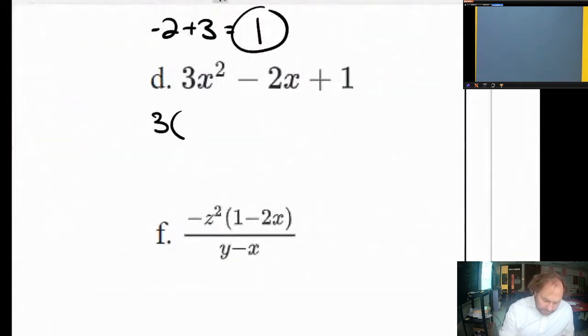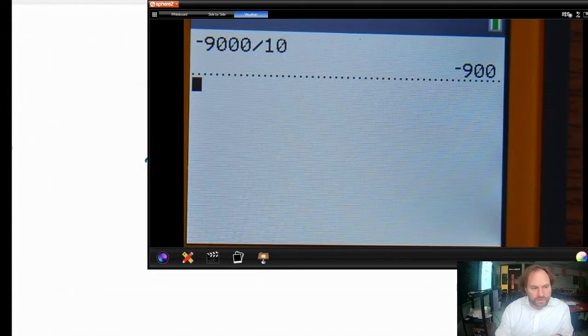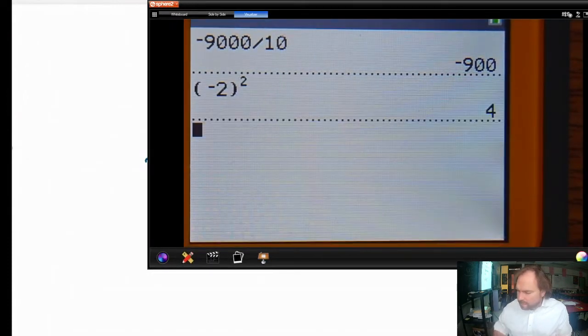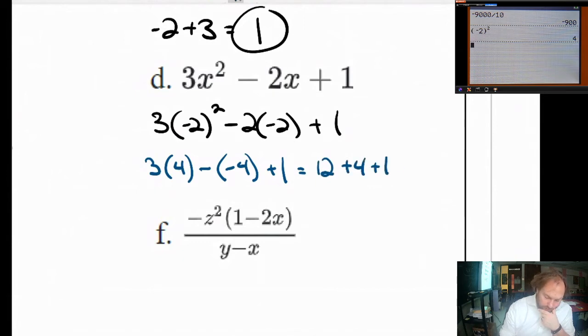Question D. We're going to have 3 times negative 2 squared minus 2 times negative 2 plus 1. This is previewing a big idea in algebra 2 called a parabola. 3 times 4. Negative 2 squared is 4. That's a really common misconception too. When you type that in your calculator, we'll take a minute to look at calculator cam really quick. When you type this in your calculator, make sure to put that negative 2 in parentheses so that you get positive 4. Negative 2 times negative 2 is positive 4 in the end. Over here, you're going to have minus, this is 2 times negative 2, also negative 4, plus 1. So that's going to be 12 plus 4 plus 1, which is going to be 17.